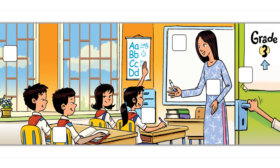Three: my friend is Dewey. He has short black hair. Four: we have a big board in our classroom. Five: there are two windows in the classroom. Six: there is one door. On the door is a poster.